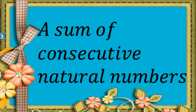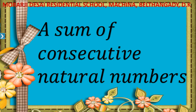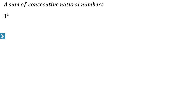Dear students, now let us study the next property of square numbers: a sum of consecutive natural numbers. Take a square number — 3 squared is equal to 3 times 3, that is 9. Can we express 9 as a sum of two consecutive natural numbers? Yes. Nine is equal to 4 plus 5, and 4 and 5 are two consecutive natural numbers. So 9 can be expressed as the sum of two consecutive natural numbers.